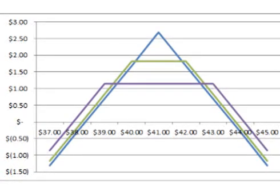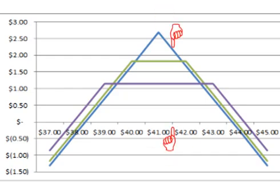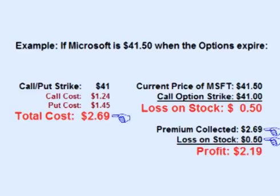Looking at the three choices, for the short straddle, the maximum profit is only obtained if the price of Microsoft is exactly at the $41 strike price when the options expire. If the price is even one penny away from the $41 strike price when the options expire, the profit level declines. For instance, let's say the price of Microsoft is at $41.50 when the options expire. $41.50 is above the $41 strike price, so the put option expires worthless. However, the call option has $0.50 worth of intrinsic value. The price of Microsoft is at $41.50, and the trader sold the right for someone to buy the stock from the trader for $41, so the trader loses $0.50 per share on the stock.